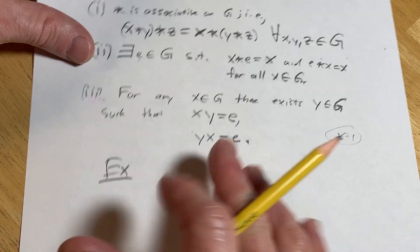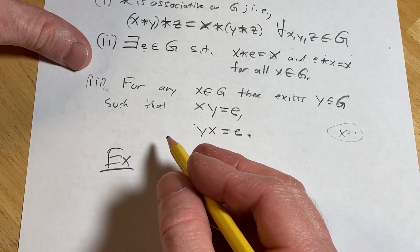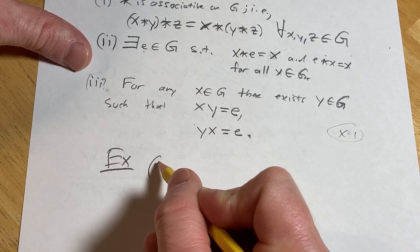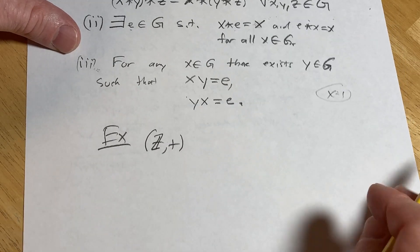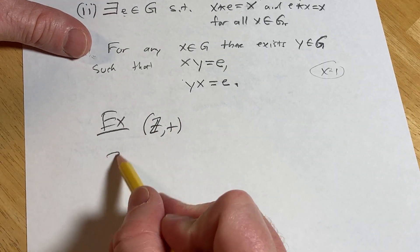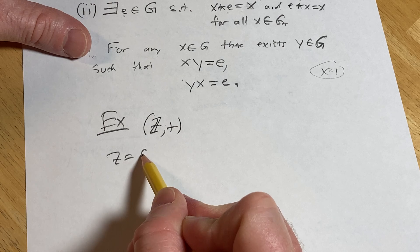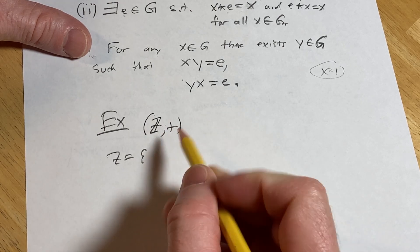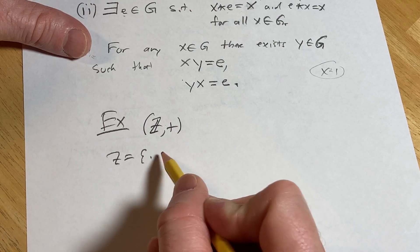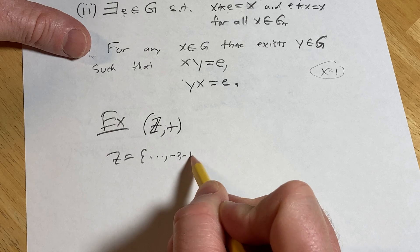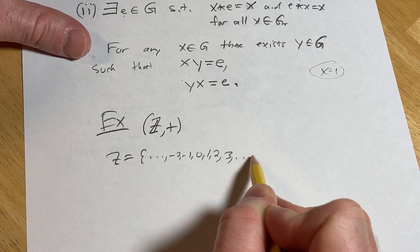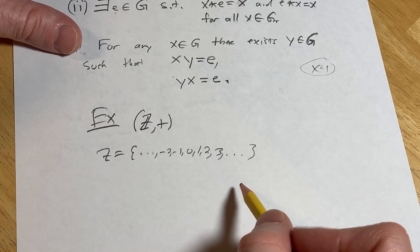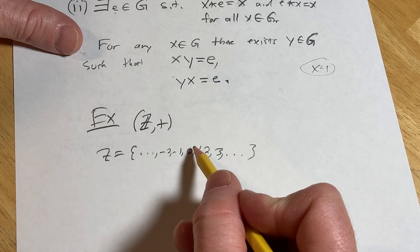If you're still watching, let's give you an example. How about this group here? Z plus. This is a really easy group. This is the integers. So what is Z? Z is all these numbers - it's like negative 2, negative 1, 0, 1, 2, 3. All the integers. Positive, negative, and 0.